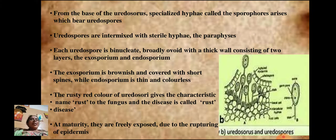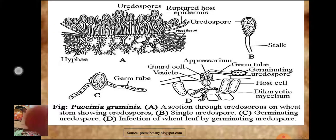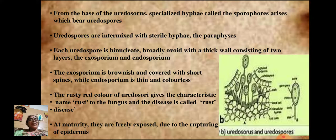From the base of the uredosaurus, specialized hyphae called sporophores arise, which bear the uredospores. The uredospores are intermixed with sterile hyphae called paraphyses.